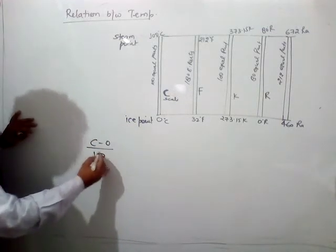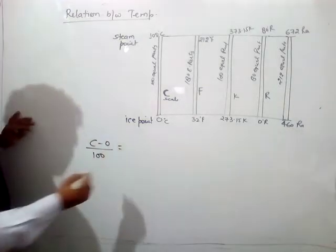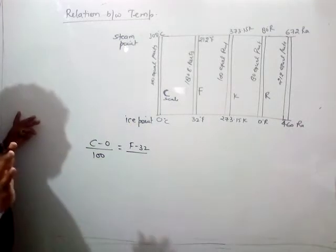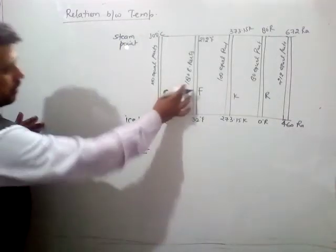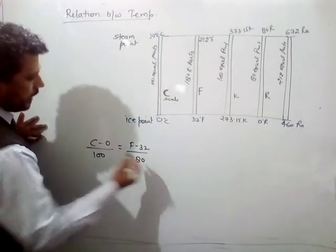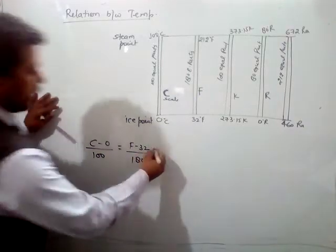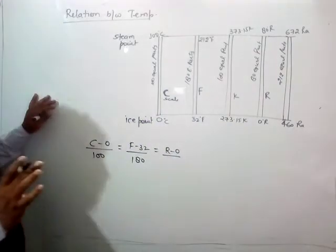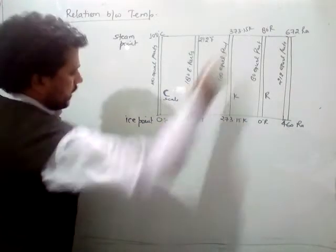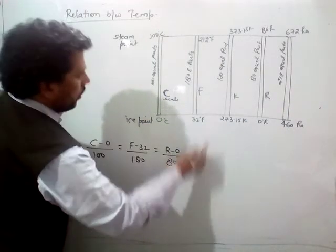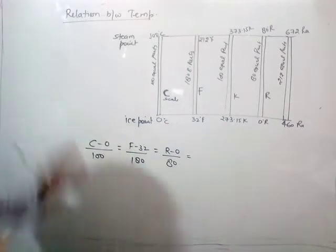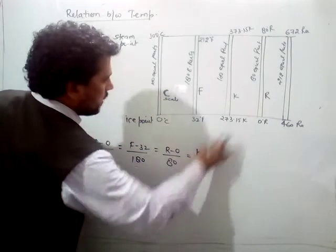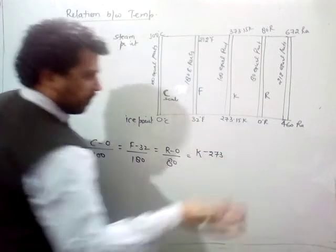So this is the general relation between all the temperature scales: (C - 0)/100 = (F - 32)/180 = (R - 0)/80 = (K - 273.15)/100.